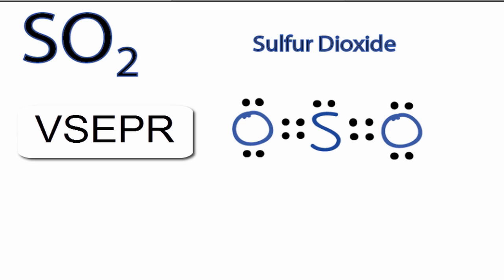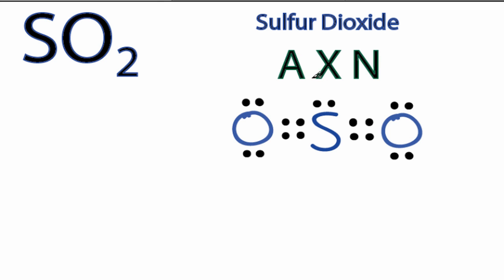We can also use the AXN notation to determine the shape of SO2. A is the central atom, the sulfur, we have one of those. X, the bonded atoms, those two oxygen atoms. And N, that is the unbonded electron pairs. We only have one unbonded electron pair for SO2.